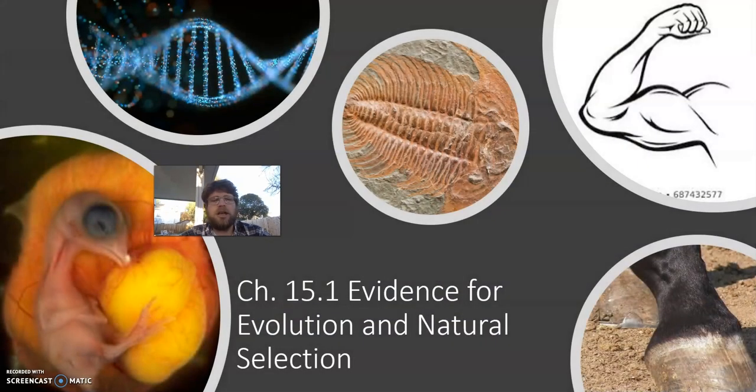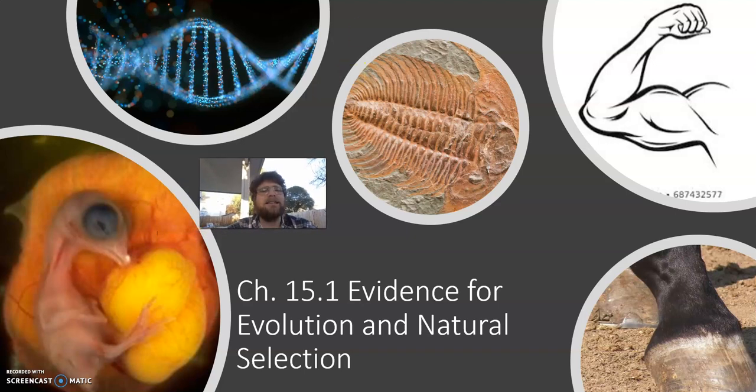So our first reading for 15.1 Natural Selection and Evidence for Evolution. We're going to look at the cell. We've been spending a lot of time looking at the cell and I want to connect the cell to what you are reading about evolution. What you're reading about Charles Darwin and embryos and fossils and horse hooves and bone structures.